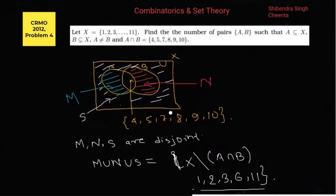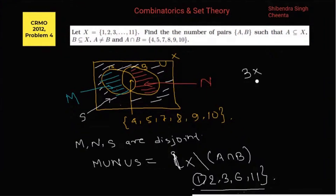Consider any element. Each element — 1, 2, 3, 6, and 11 — can either belong to M, N, or S. So each one can belong to this set in three possible ways. Similarly, 2 in three ways, 3 in three ways, 6 in three ways, and 11 in three ways. That gives us 3 to the power 5 possible ways.